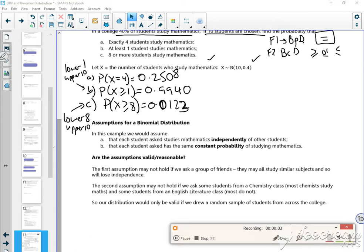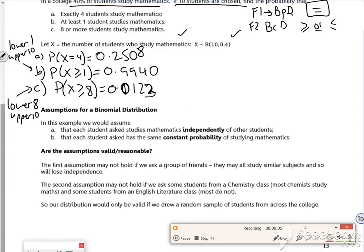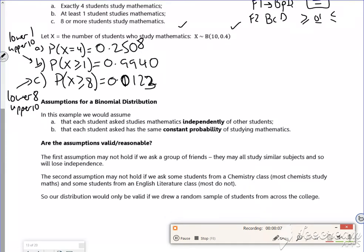Right then, so second bit, a bit waffly. So it says for the assumptions, that each student asked studies maths independently of other students, and the probability is constant. So them are the assumptions that we have.